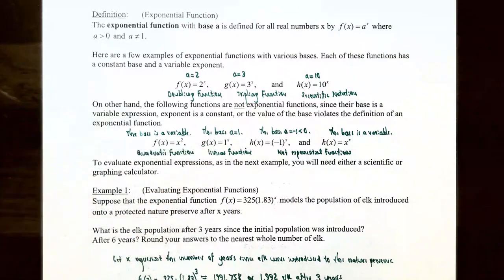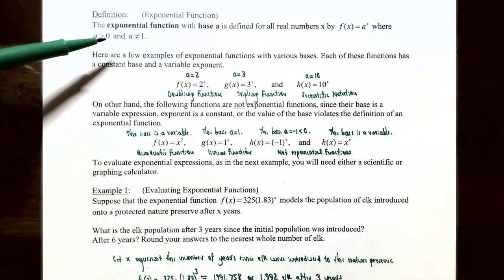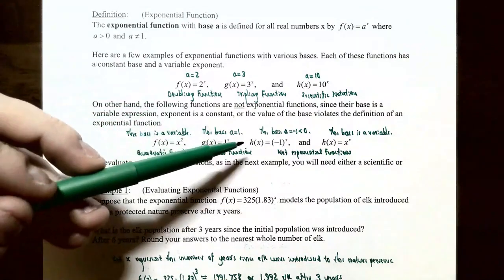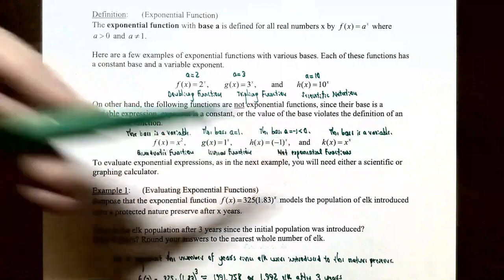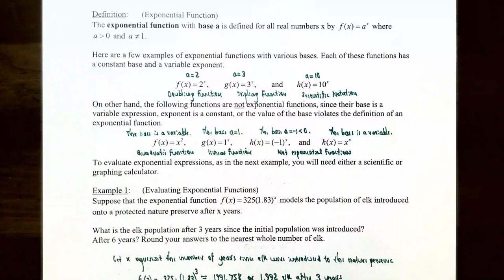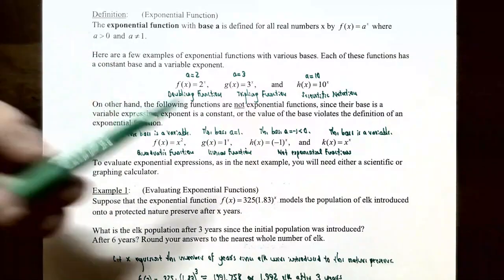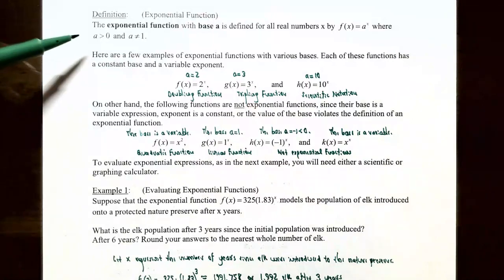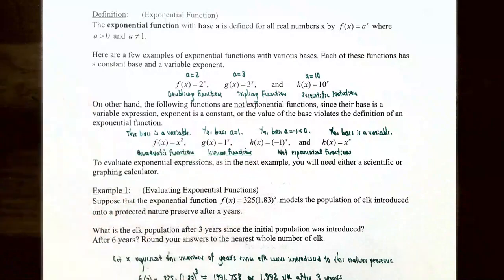g of x equals 1 to the x violates the definition because the base cannot be one — it would just be a constant function equal to 1. h of x equals negative 1 to the x also violates the definition because the base must be positive. And k of x equals x to the x is not exponential because the base is the variable x. The base must be a number greater than zero but not equal to one, and the variable must be in the exponent.